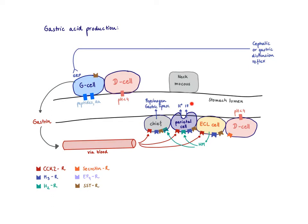A major product of the parietal cell is the intrinsic factor, which, by the way, is the only product of the stomach that is really essential for life. It's going to help us to absorb vitamin B12.